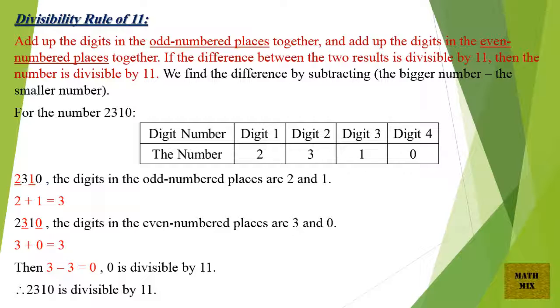Divisibility rule of number 11. Add up the digits in the odd numbered places together, and add up the digits in the even numbered places together. If the difference between the two results is divisible by 11, then the number is divisible by 11. We find the difference by subtracting the bigger number minus the smaller number. For the number 2310.